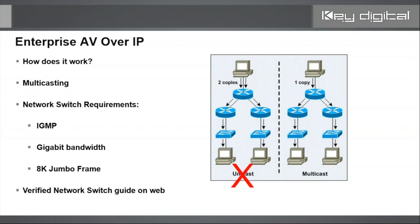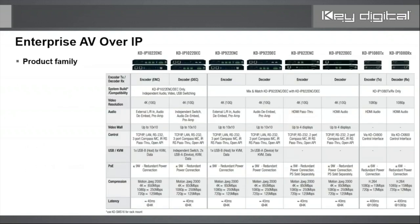Each of our network switches on our guide supports a minimum of 1G bandwidth — some are higher. 8K jumbo frame is needed for our 4K system; it enables larger-than-traditional network packet sizes through the ports — sometimes 9K or 10K. Our verified network switch guide confirms each switch meets these criteria, has passed age testing, and we list them on our website along with how-to configuration guides — mostly pictures, very easy.